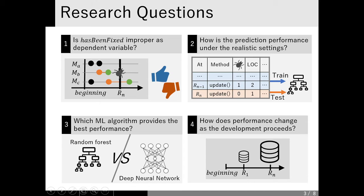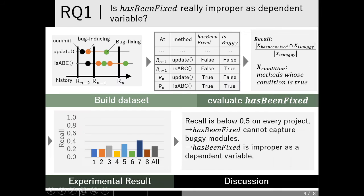In this slide, I introduce the summary of research questions. In RQ1, we research whether has-been-fixed is really improper as a dependent variable, quantitatively. In RQ2, we measure the performance of bug prediction under realistic settings — if the performance is bad, we can say bug prediction is still an open challenge. In RQ3, we compare two machine learning algorithms to find which provides the better performance. In RQ4, we analyze the relationship between prediction point and prediction performance.